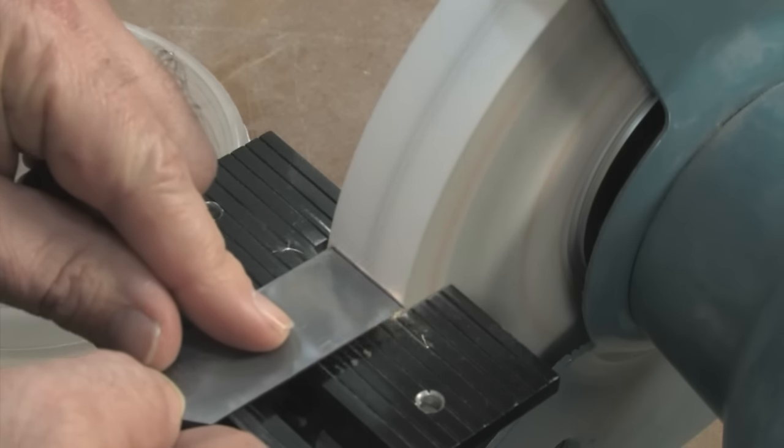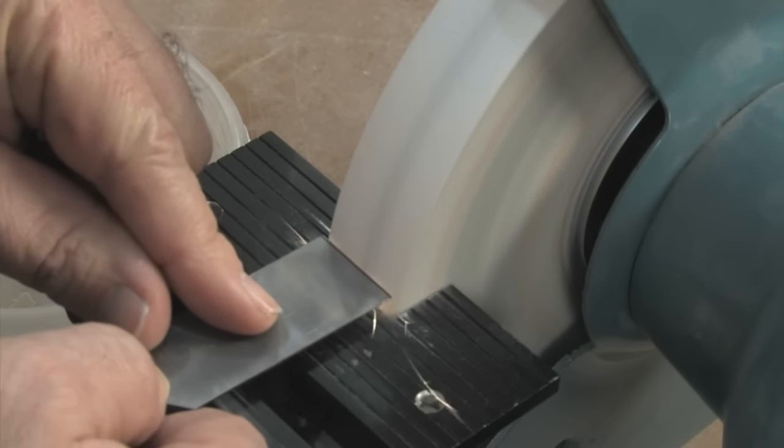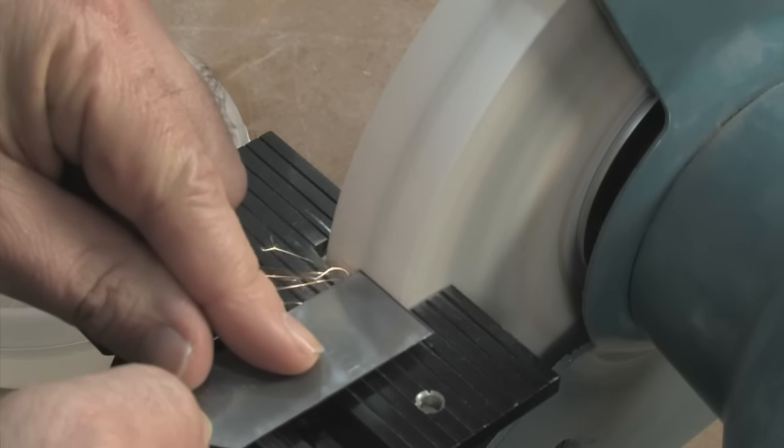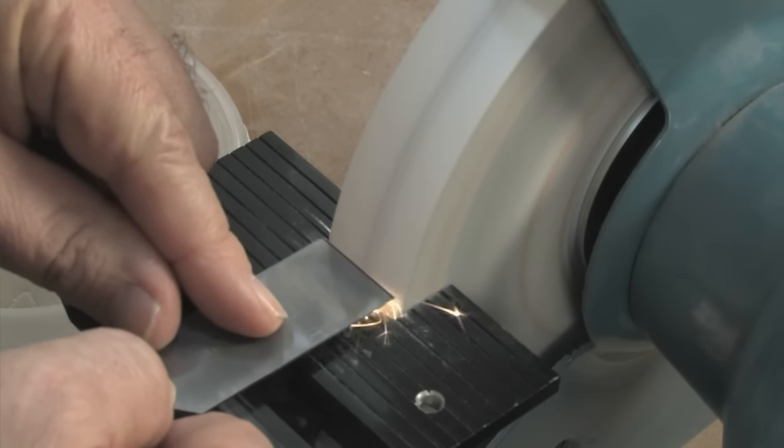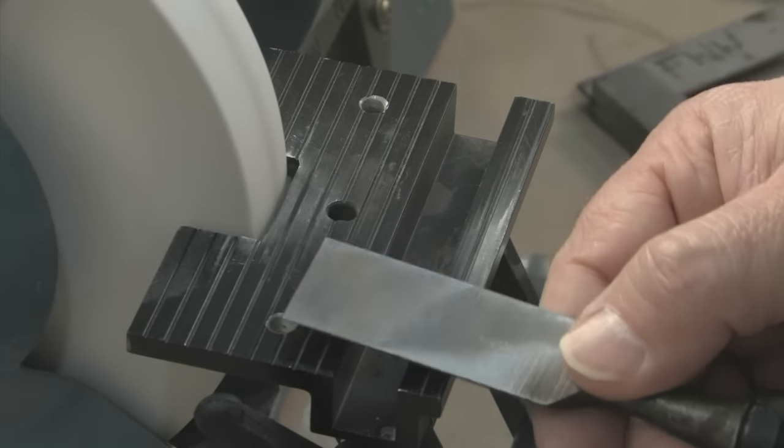Once again, all it takes is a very light touch. In this case, since we are grinding off the thin tip almost instantly and blunting it, heat shouldn't be a problem if you use a light touch, so you don't have to dunk the tool in water.